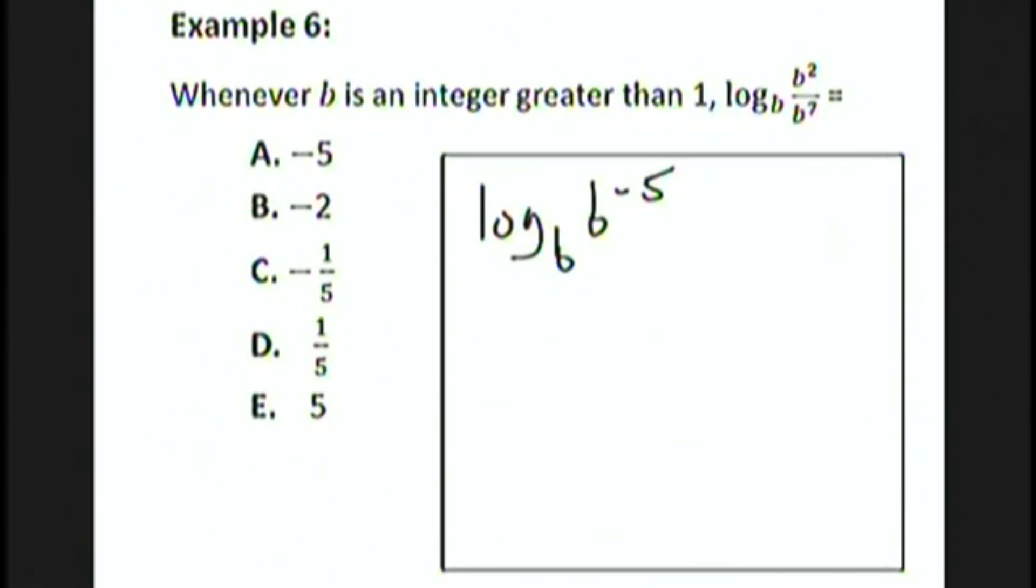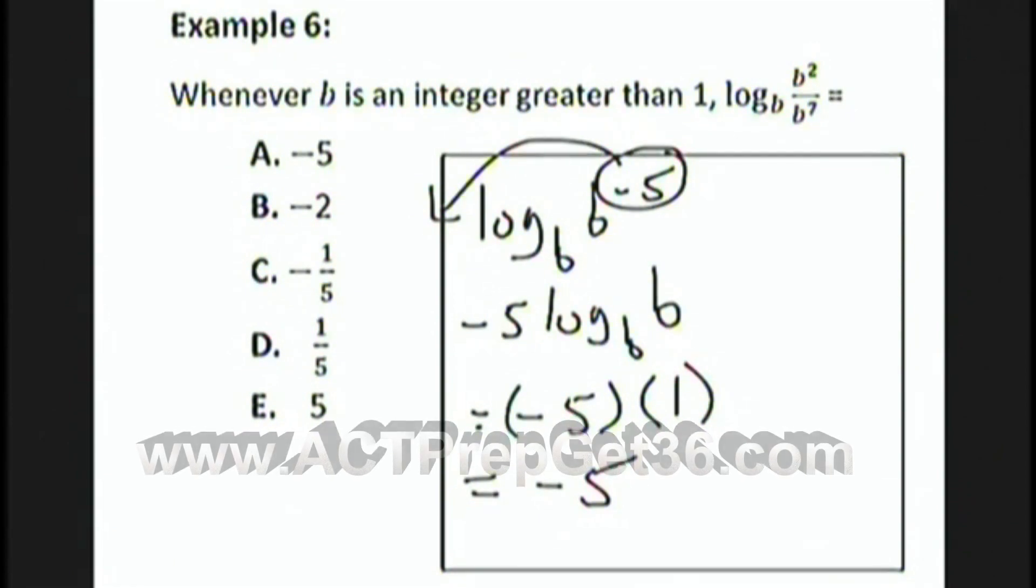We now use that last rule of logarithms to bring the negative 5 out in front. And finally, log base b of b is equal to 1. Negative 5 times 1 is negative 5. That's choice A.